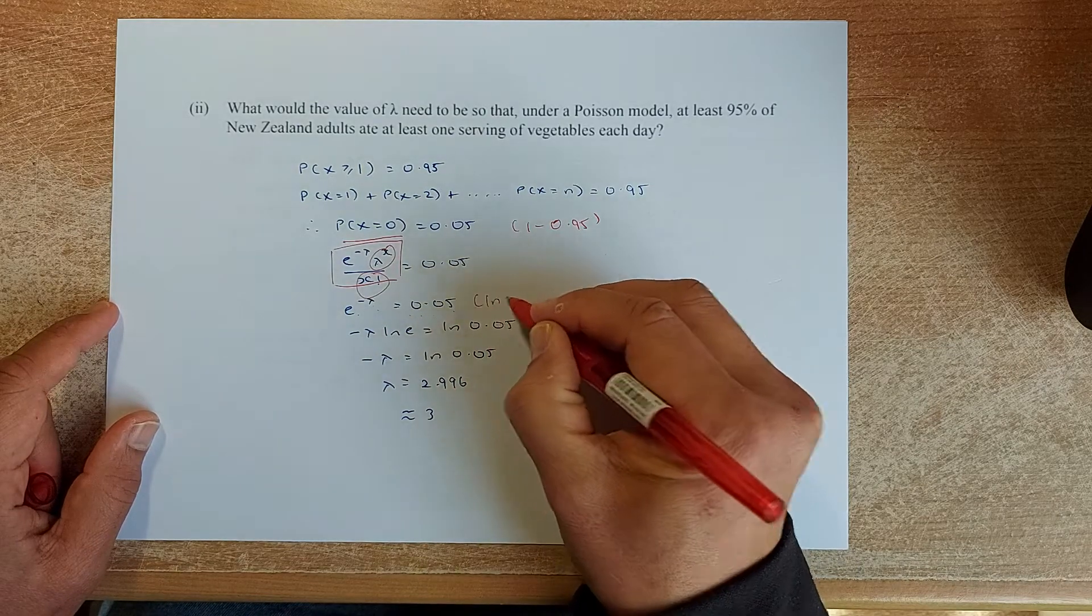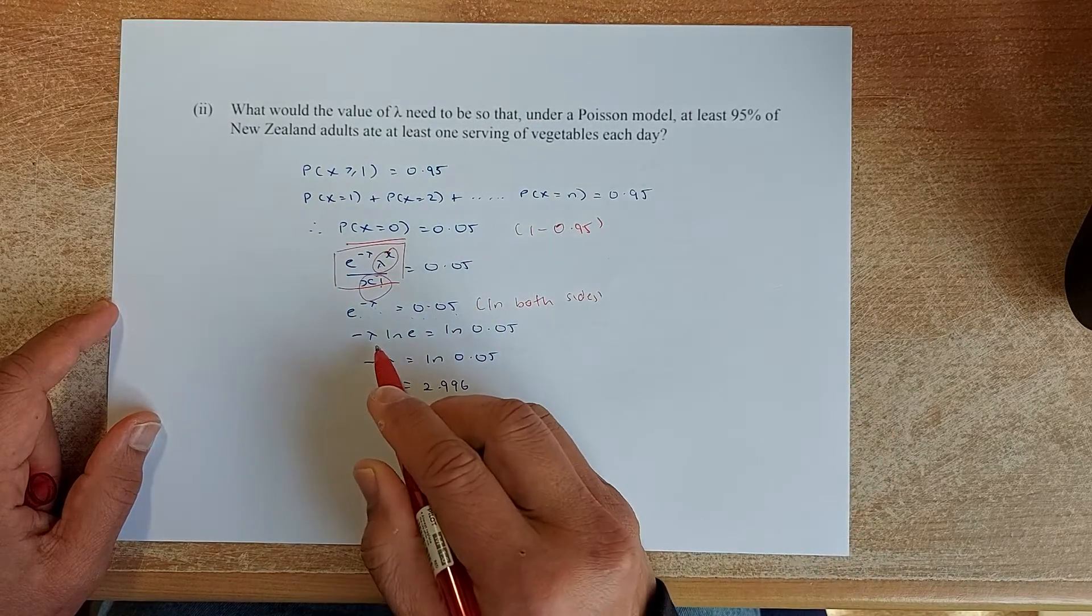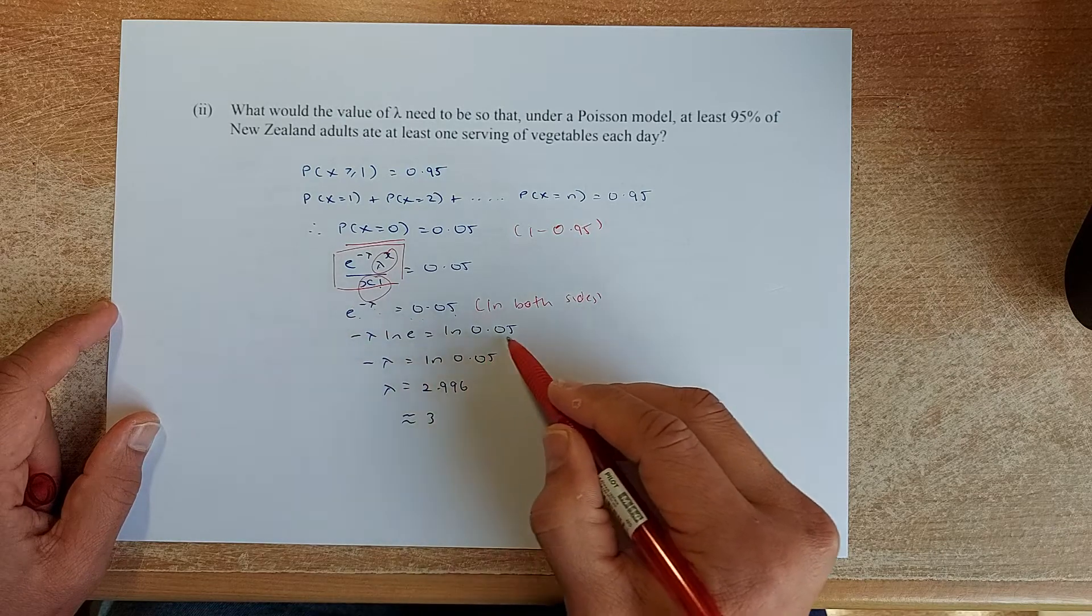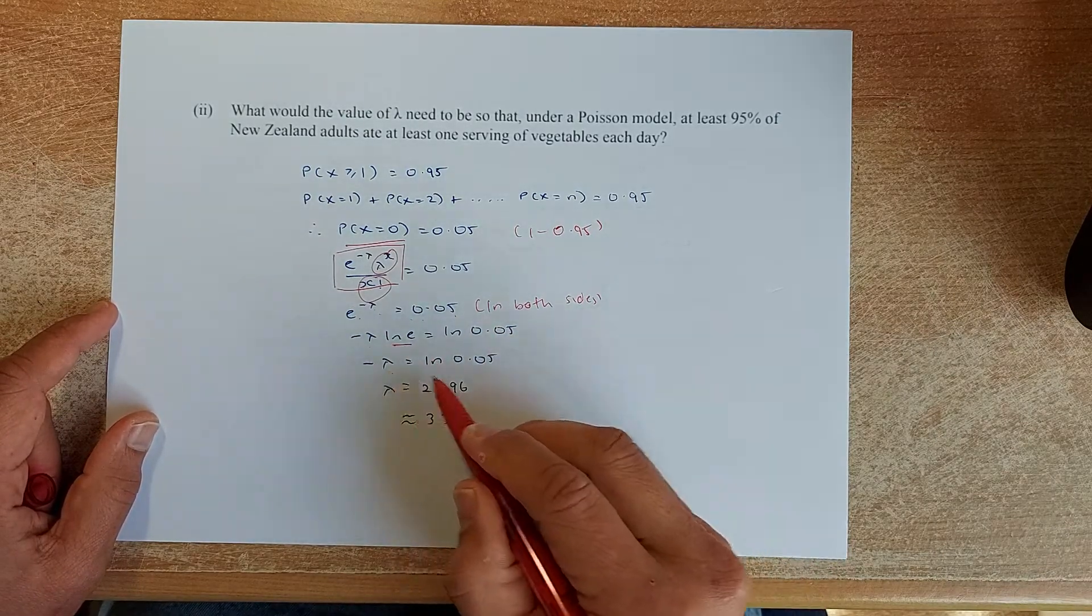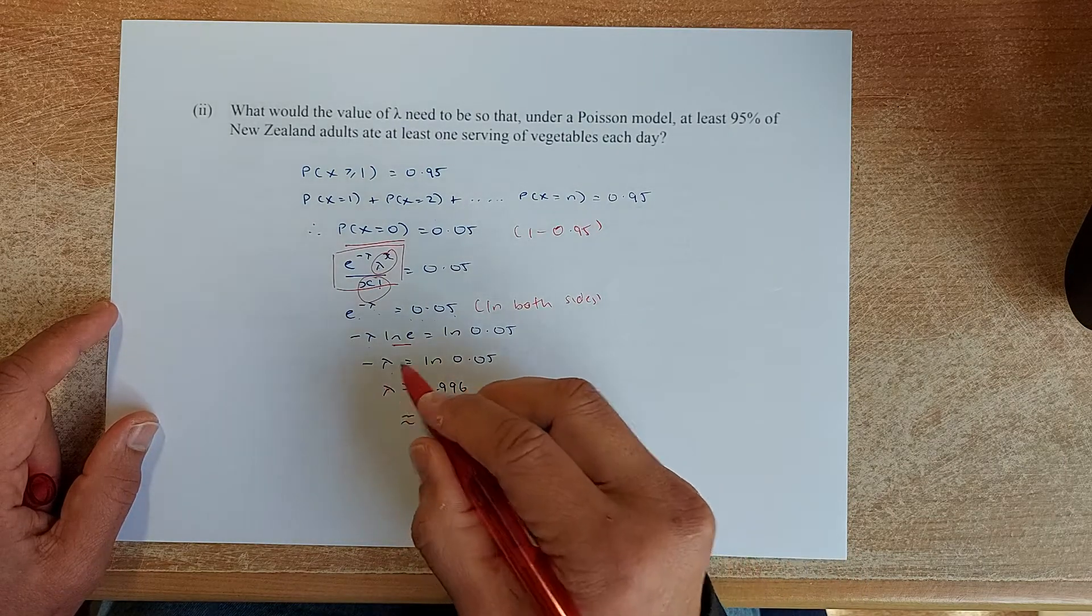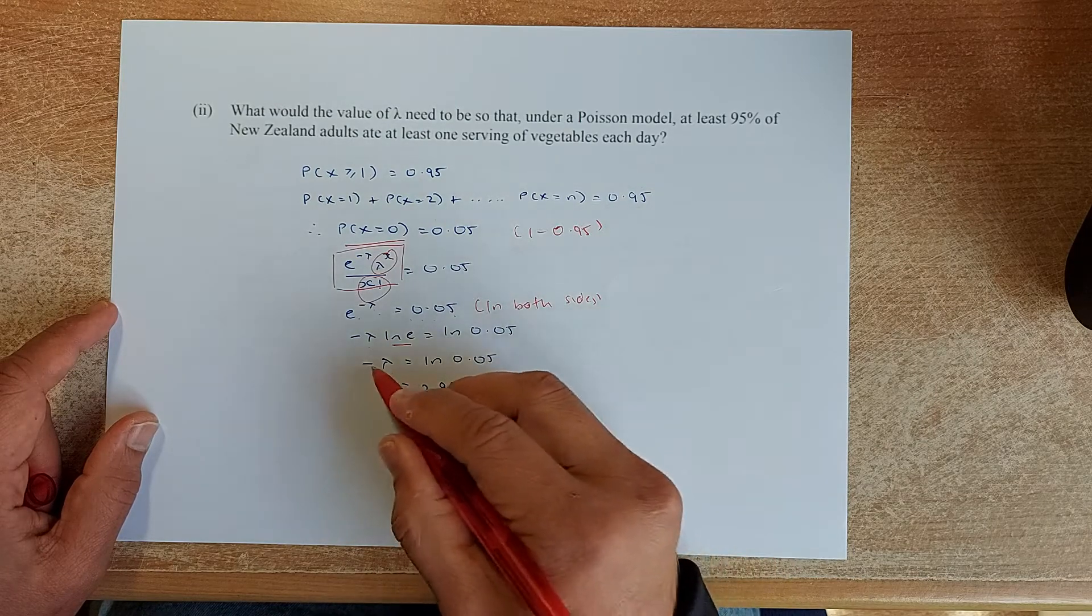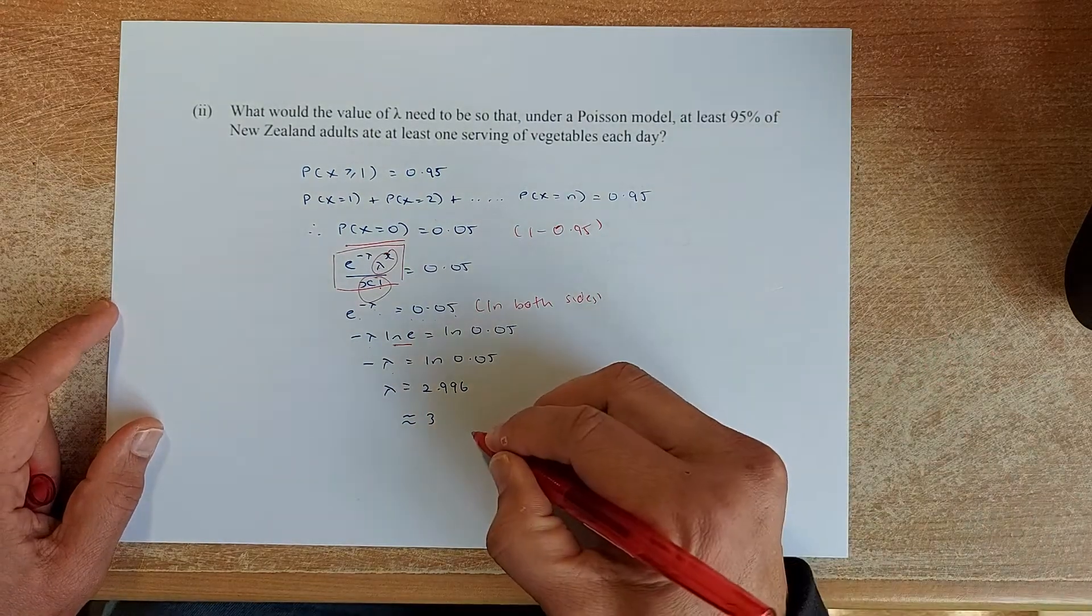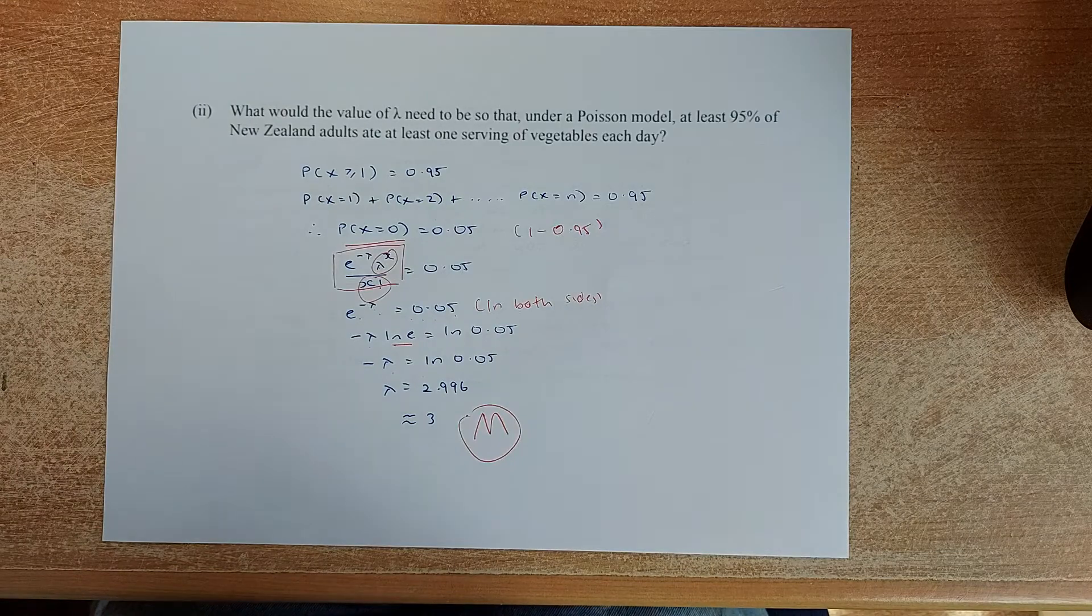Then you are going to ln both sides. You will get minus lambda because ln e, the lambda you can bring it down. Minus lambda, ln e equal to ln 0.05. Then ln e equals to 1. So minus lambda is ln 0.05. Put in your calculator. ln 0.05 is actually negative 2.996. You get rid of both negative signs. So lambda is 2.996. It is close to 3. And that will give you a merit.